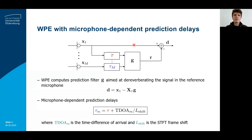In the STFT domain, the WPE algorithm estimates and subtracts the undesired reverberate component R from the reference microphone signal X1 to obtain the desired dereverberated output D. In estimating the undesired reverberate component, the WPE input is first delayed by the prediction delay tau, which has previously been proposed to be fixed across all microphones. In this presentation, we propose using microphone-dependent prediction delays, tau_m, to predict the undesired reverberate estimate.